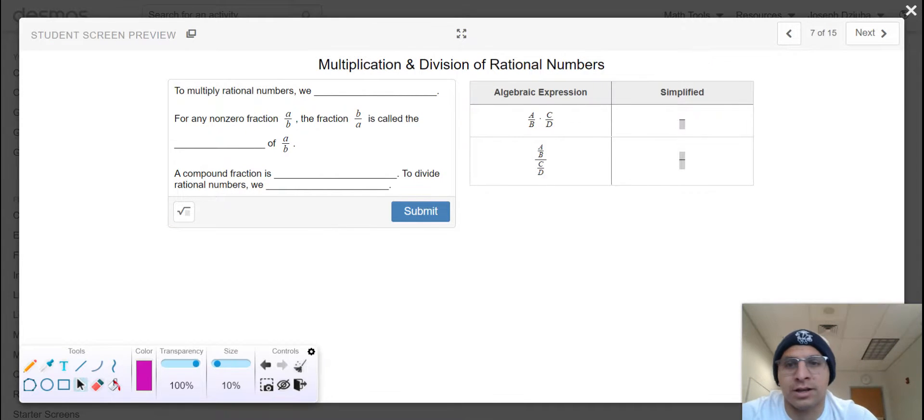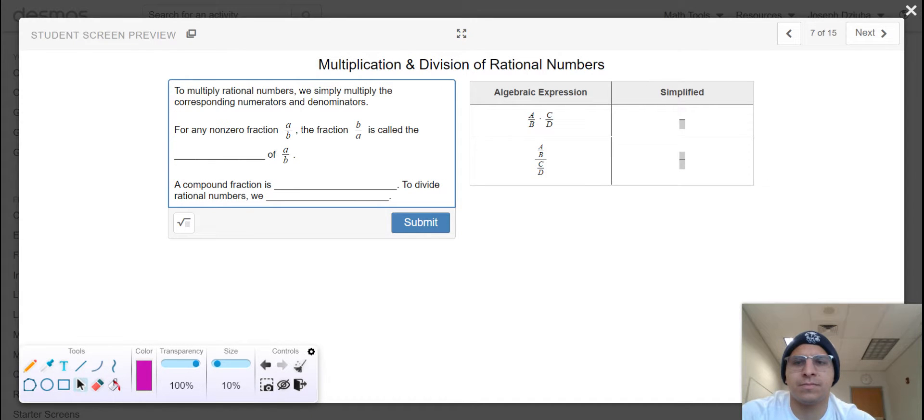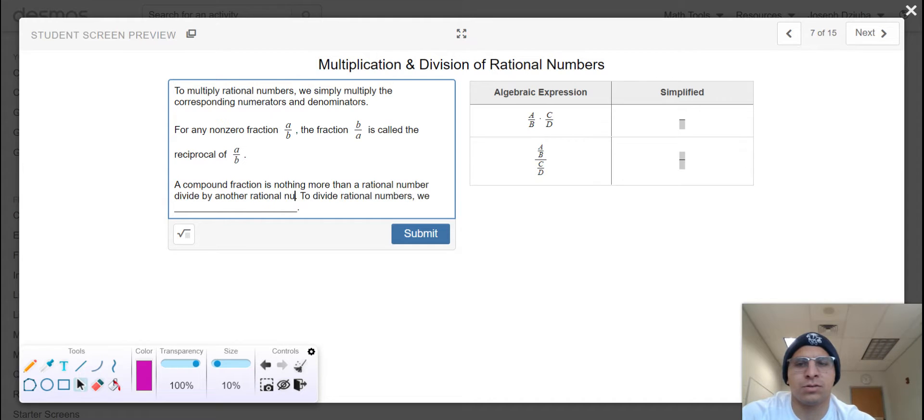Because we got bigger fish to fry, which is arithmetic and rational numbers. So to multiply rational numbers, we simply multiply corresponding numerators and denominators. And if you forgot your vocab word, however you should have defined it by now, we call the fraction b divided by a the reciprocal of a divided by b.